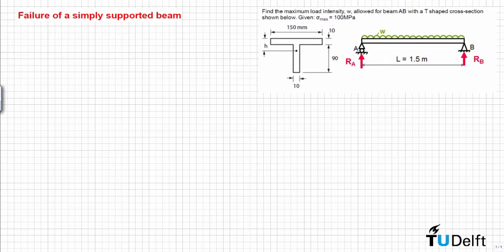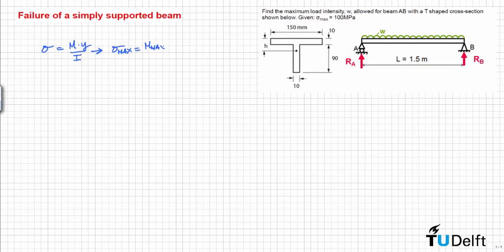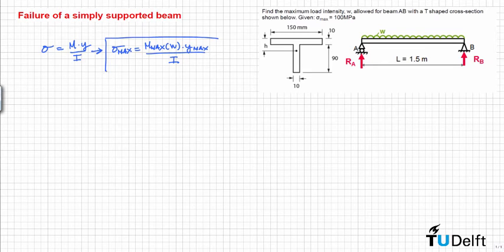The approach to solve this exercise is quite simple. We know that the normal stress — since we don't have any axial load — is equal to the bending stress, which is equal to the moment times Y divided by the moment of inertia. So we want to calculate the maximum load intensity W, and the maximum normal stress is equal to M_max, which is a function of load intensity, times Y_max divided by the moment of inertia.